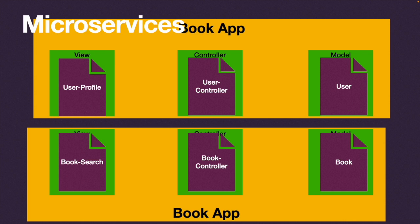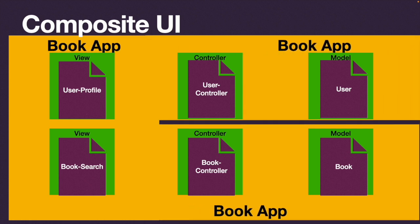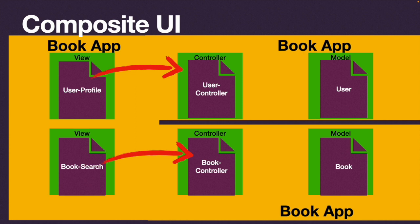Make your applications big enough to provide significant value and have their own reason for existing, but small enough that you don't end up with monolith applications where you scale a giant app just because a small part of it gets heavy traffic. I want to cover one more thing you can do with microservices. What if we moved the book app away and had a book microservice and a user microservice, and then a third application on the left which only has views in it - an app called composite UI.